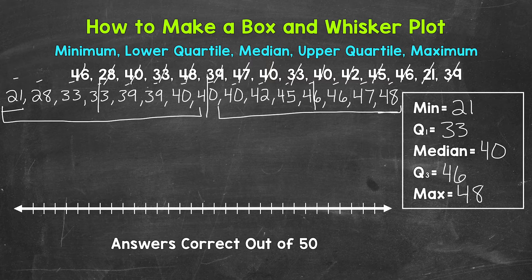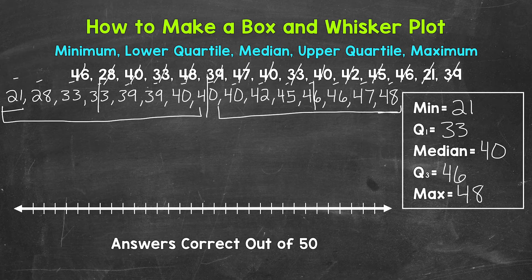Now we have all of the information we need to create the box and whisker plot. We need to start by creating a number line. Let's take a look at our minimum and maximum to make sure we include all of our data. The minimum is 21 and the maximum is 48, so let's start our number line at 20 and end it at 50. Depending on the data you are working with, you can adjust the number line.